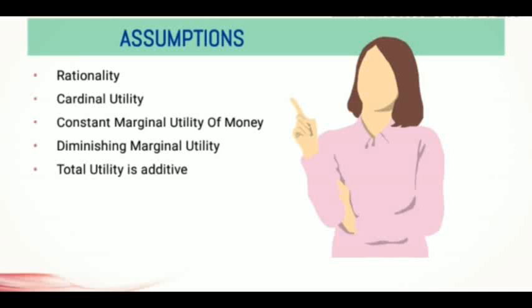This is the axiom of diminishing marginal utility. The last assumption is that total utility is additive — the total utility of a basket of goods depends on the quantities of the individual commodities. In early versions of the theory of consumer behavior, total utility was assumed to be additive. The additivity assumption was dropped in later versions of cardinal utility theory. Additivity implies independent utilities of the various commodities in the bundle, an assumption clearly unrealistic and unnecessary for the cardinal theory.